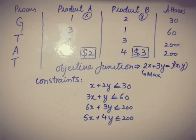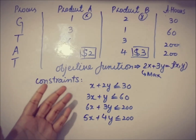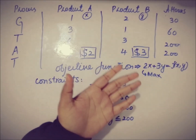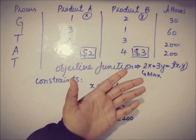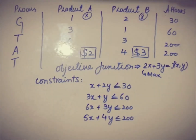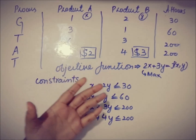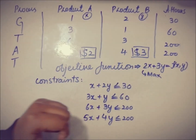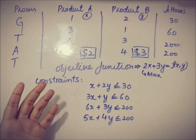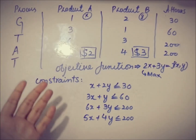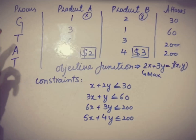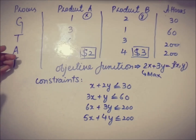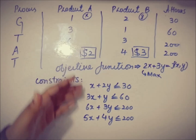Here we have the model of a linear programming problem where we have to maximize the profit. This is the objective function 2x plus 3y. The objective is to maximize the profit, so we write: maximize 2x plus 3y. The limitations we have are according to the available hours in each operation — grinding, turning, assembling, and testing. So these are the constraints.